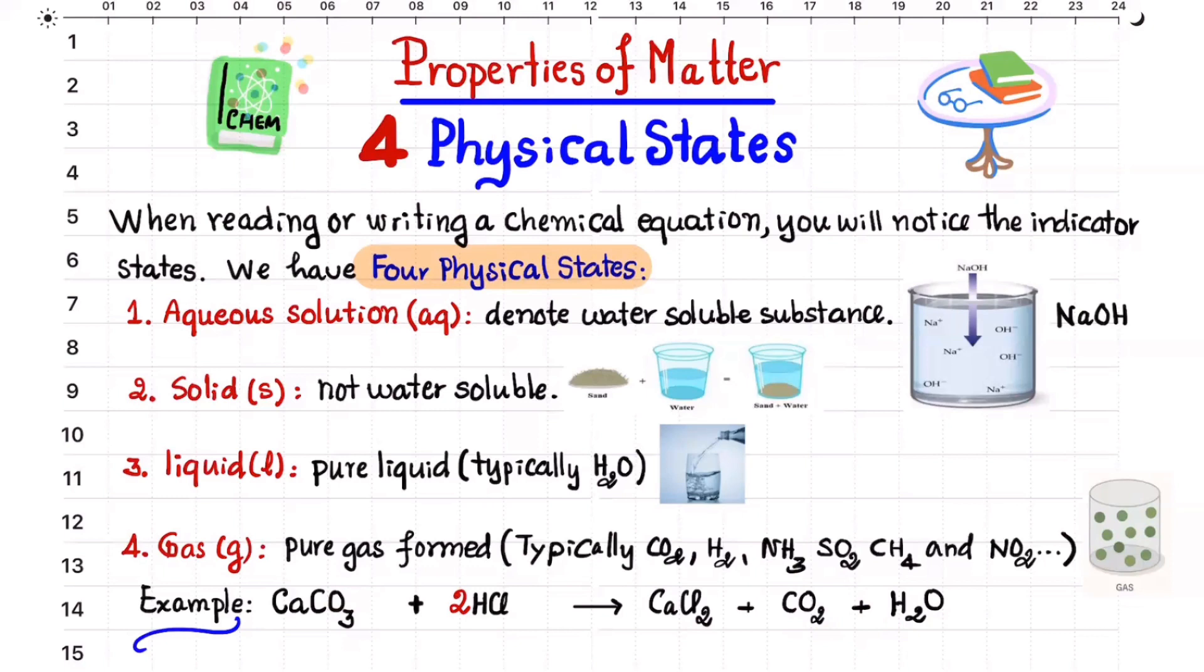So that when you balance the chemical equation already, that to make sure that the reactants in the chemical equation and the products in the chemical equation too have to be equal. So after that, we have to put the four physical states in the chemical equation, which is very important.